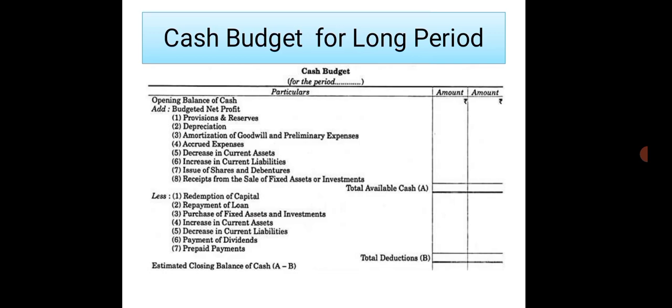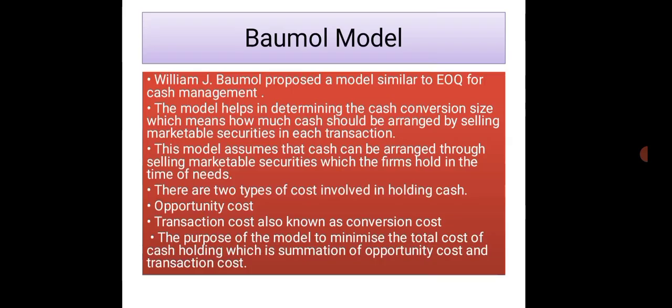The next step is subtracting payments like redemption of capital, repayment of loan, purchase of fixed assets and investments, increase in current assets, decrease in current liabilities, payment of dividends, and prepaid payments. If you subtract B from A, you get the estimated closing balance of cash.